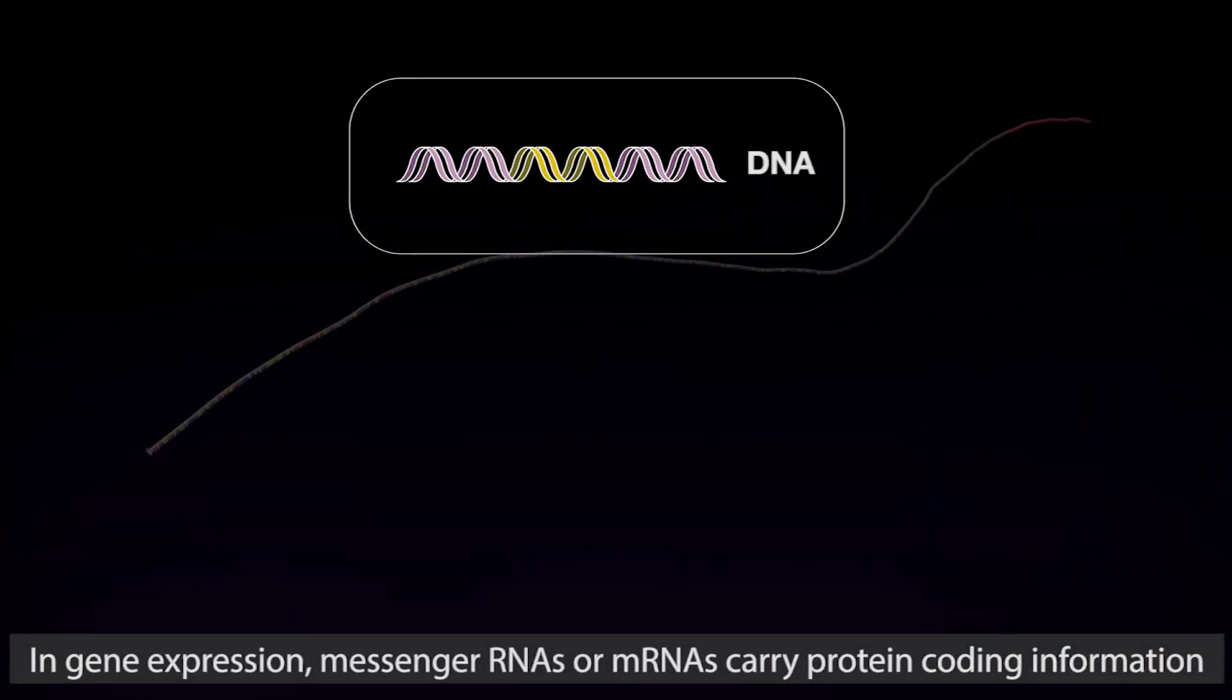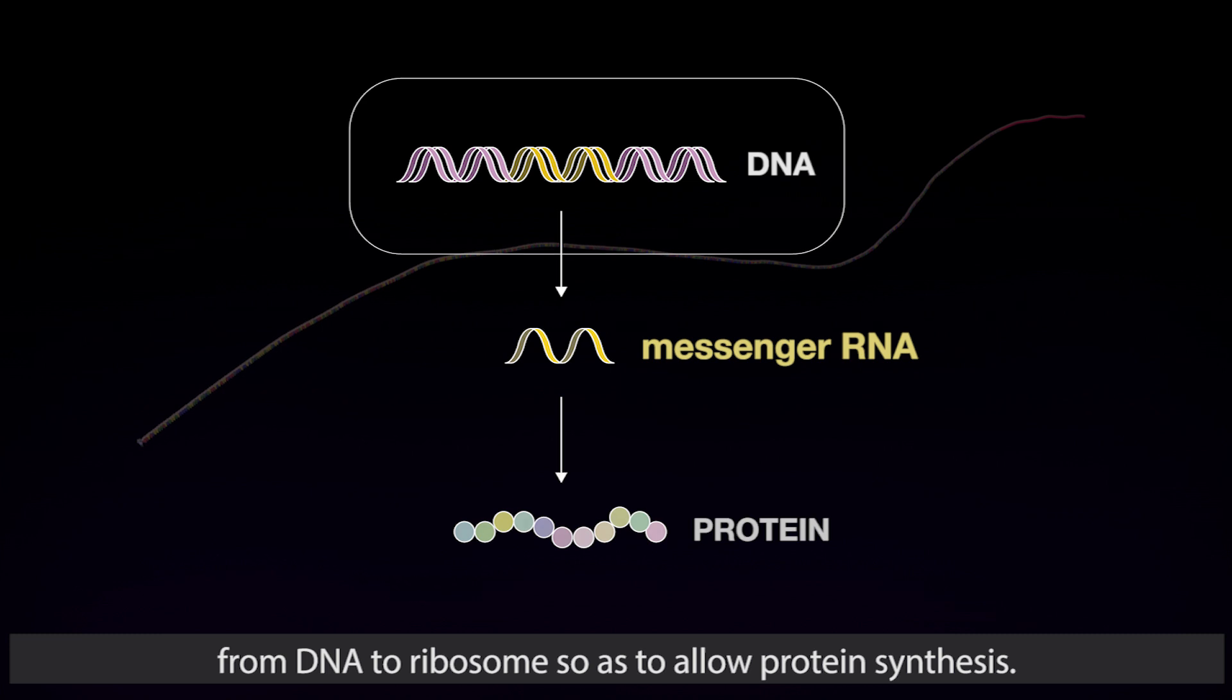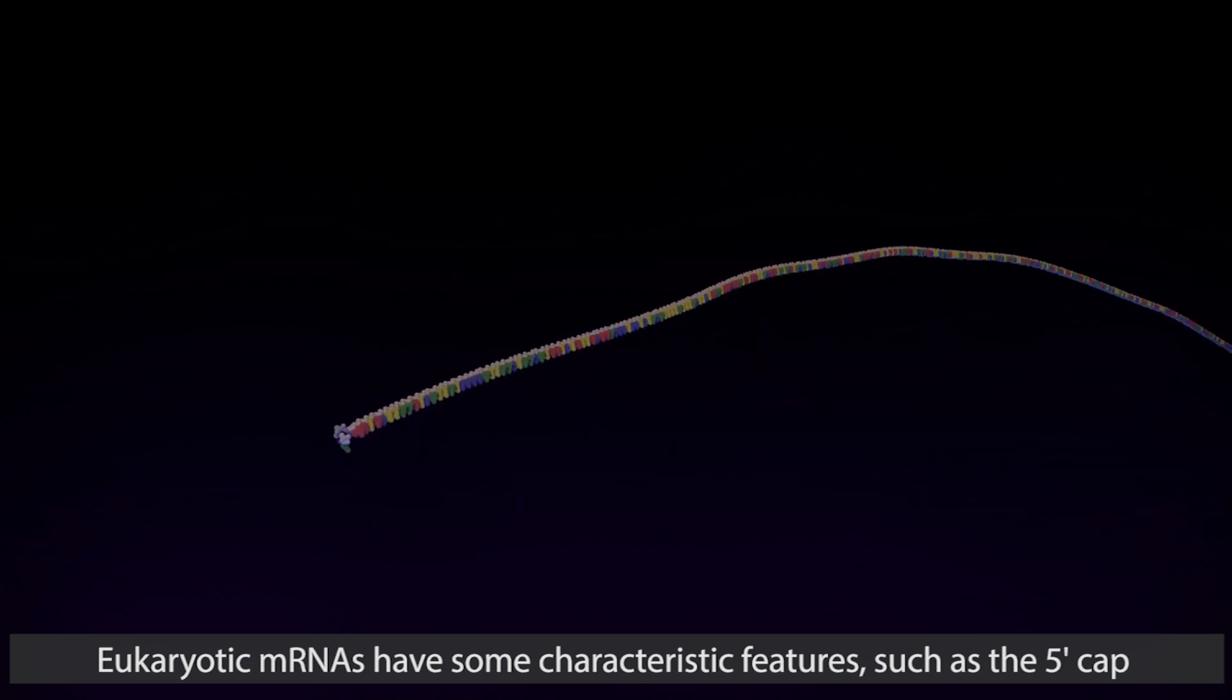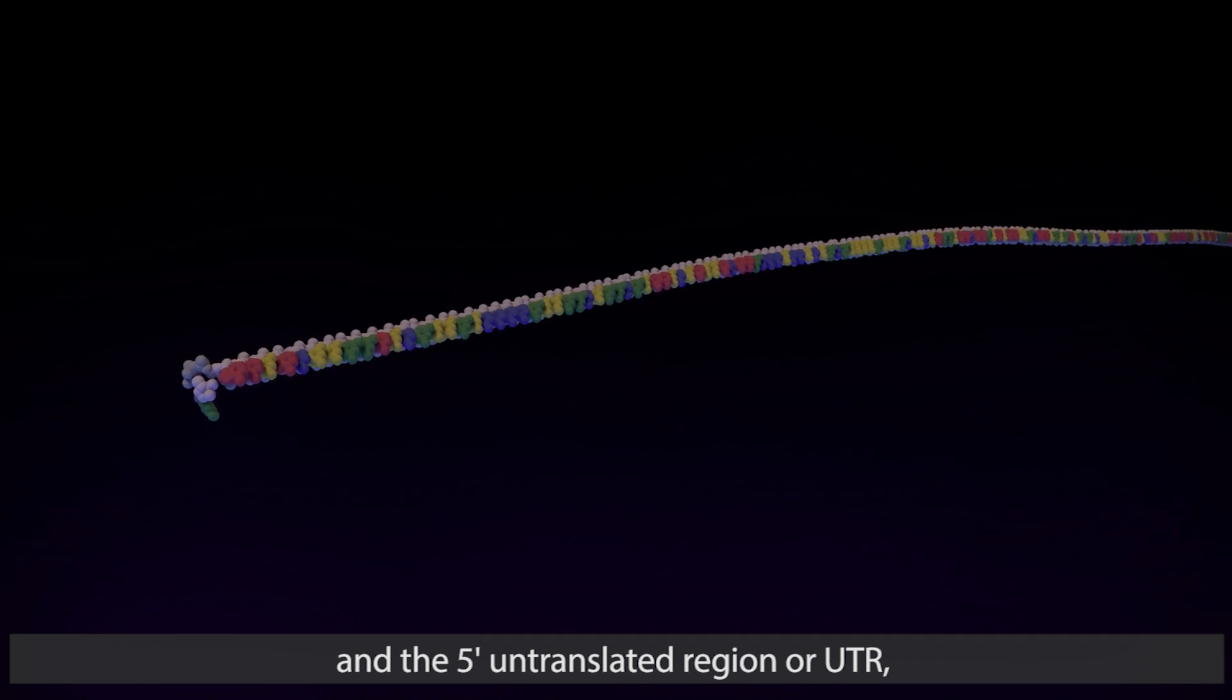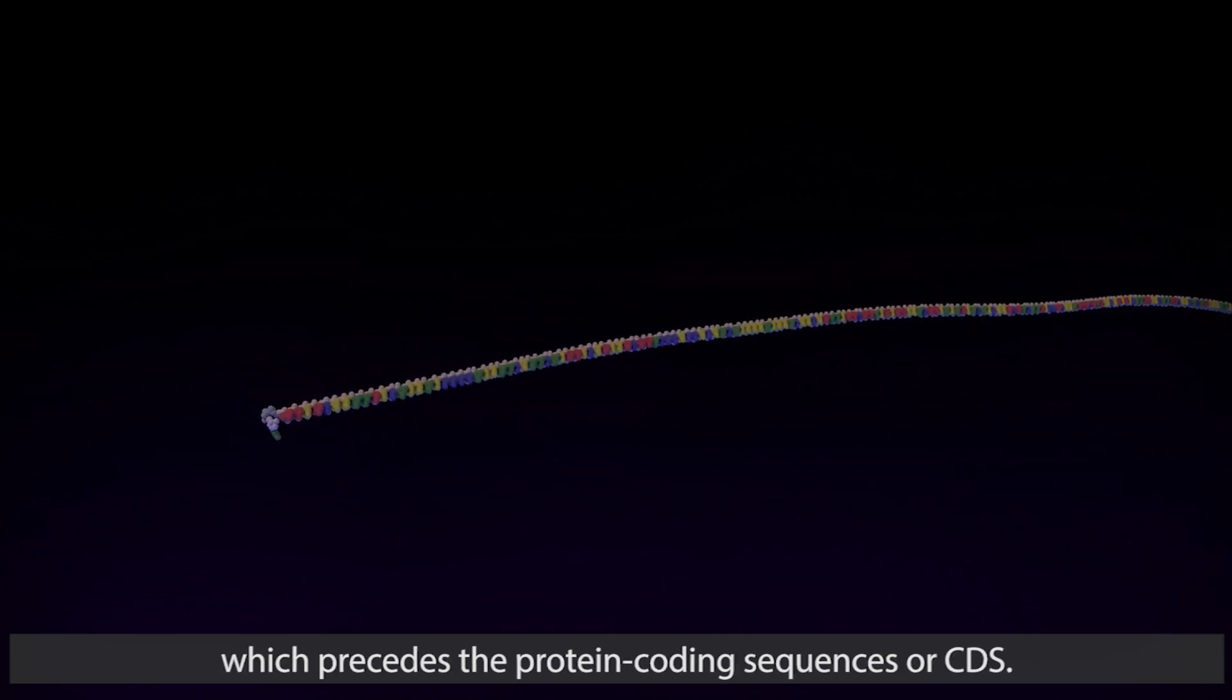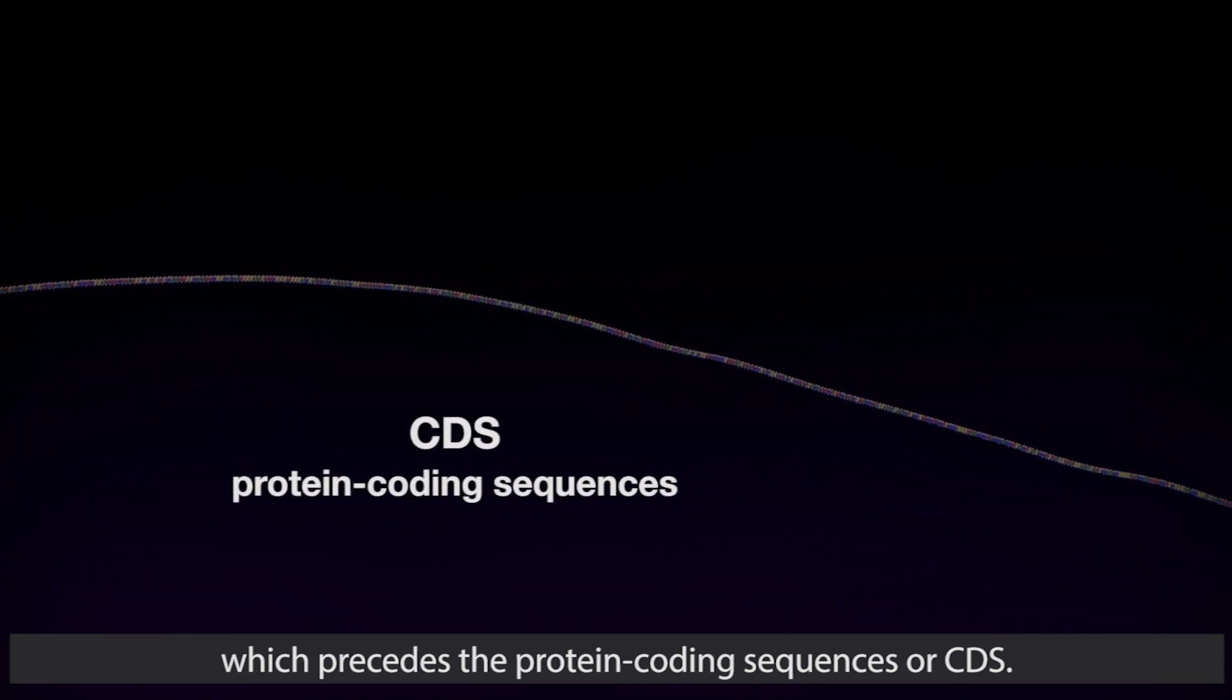In gene expression, messenger RNAs or mRNAs carry protein coding information from DNA to ribosome so as to allow protein synthesis. Eukaryotic mRNAs have some characteristic features such as the 5' cap and the 5' untranslated region or UTR, which precedes the protein coding sequences or CDS.